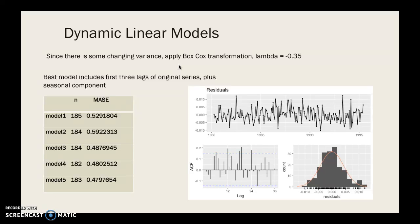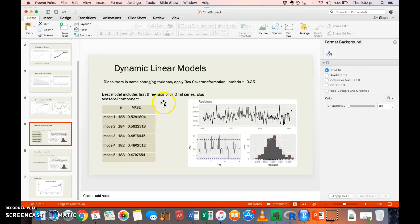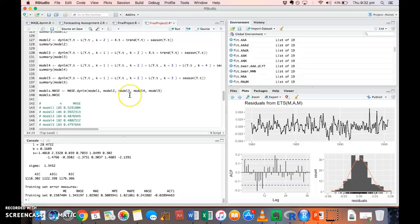You can see here is Model 5 with a MASE of 0.479, and that model included the first three lags of the original series plus a seasonal component. It didn't actually include the trend component, which was interesting.